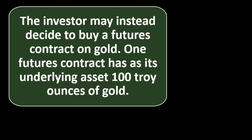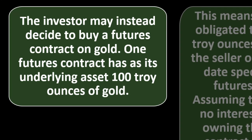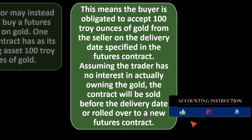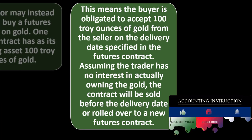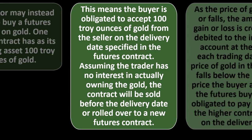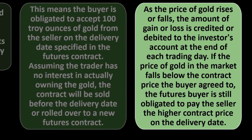Alternatively, an investor may buy a futures contract on gold. One futures contract has its underlying asset as 100 troy ounces of gold, meaning the buyer is obligated to accept 100 troy ounces from the seller on the delivery date. If the trader has no interest in actually owning the gold, the contract will be sold before delivery or rolled over. As gold's price rises or falls, the gain or loss is credited or debited to the investor's account at the end of each trading day.